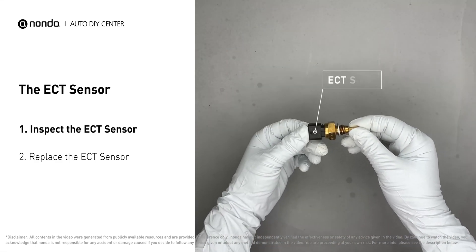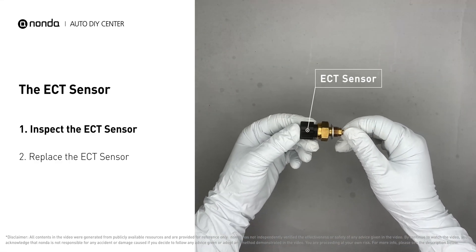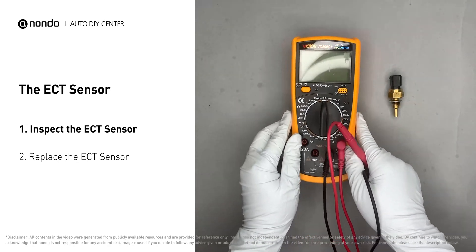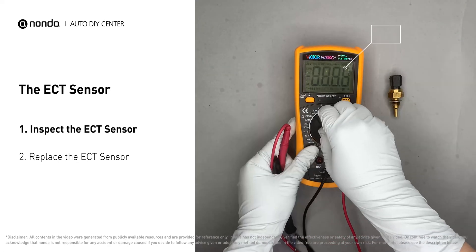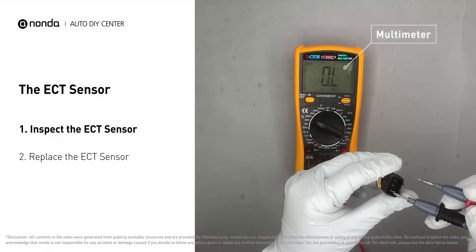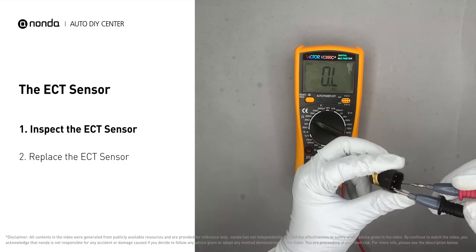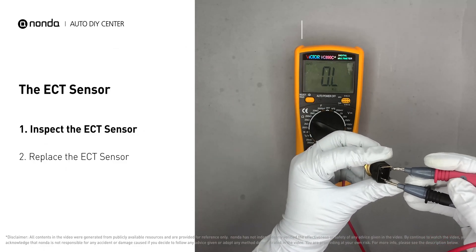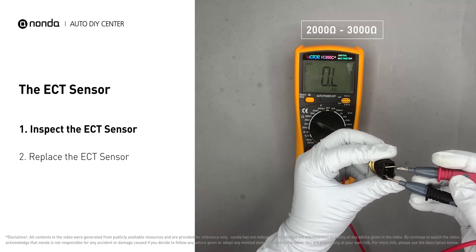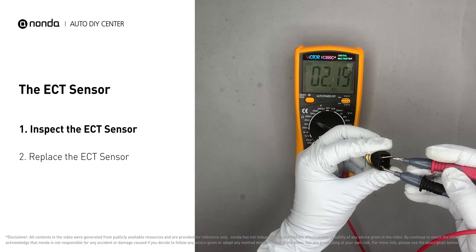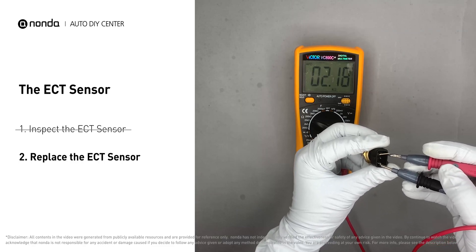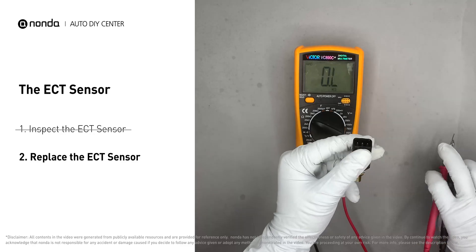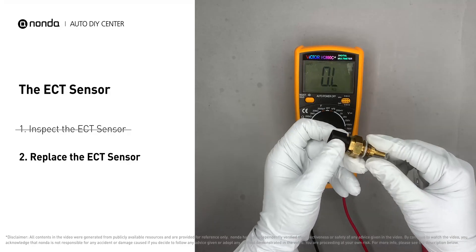Remove the ECT sensor from the engine. Use a multimeter to proceed with a test on the ECT sensor. At an ambient temperature of 68 degrees Fahrenheit, the sensor resistance should be between 2000 ohms to 3000 ohms. If you do not get a reading, this indicates that the ECT sensor is faulty and needs to be replaced.